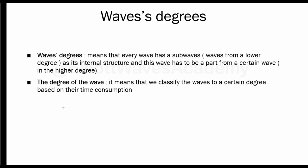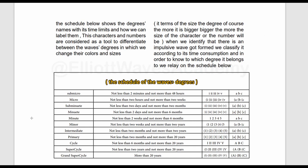We do that by simply looking at the schedule. As you can see in this schedule, we have different names that represent different degrees. Let's say we have an impulsive wave like that—1, 2, 3, 4, 5—and this wave consumes a time not less than two minutes and not more than 48 hours. This means that this wave is from a sub-micro degree.